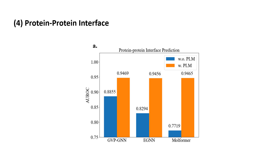Next, protein-protein interface prediction investigates whether two amino acids will come into contact with one another when their respective proteins bind together. The AUROC increases for all three models when we augment them with the protein language models. It is quite interesting to see that Molformer initially falls behind the other models, but after injecting knowledge learned by the protein language models, the Molformer achieves similar performance compared to the other models.